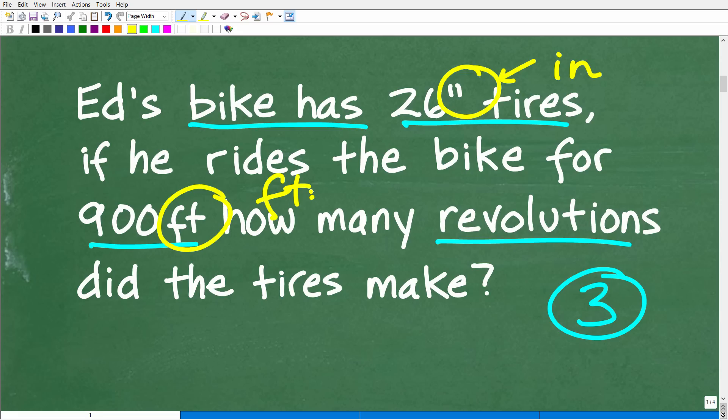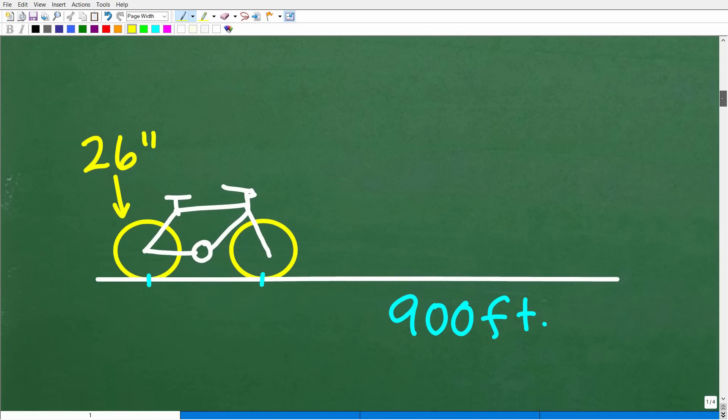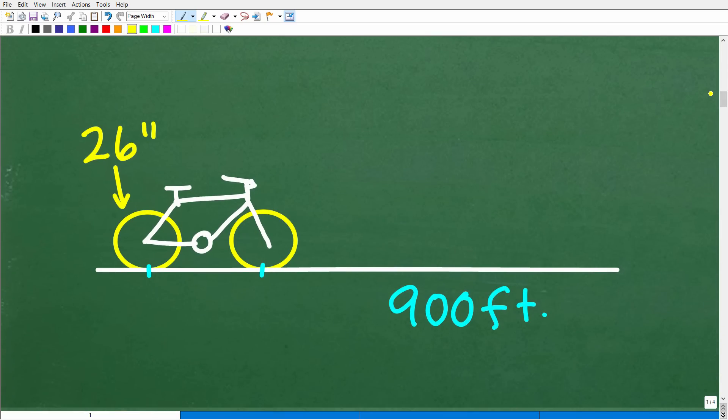But the first thing you want to do in any math word problem is to model the situation. So let's go ahead and take a look at my sketch. Here is Ed's bike. Now, Ed's bike tires are 26 inches. In other words, that's the width of the tires. And the width is another way to describe the diameter of a circle. Of course, we're going to assume that both tires are 26 inches.